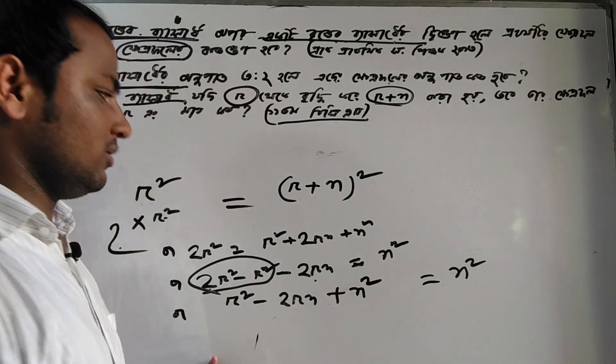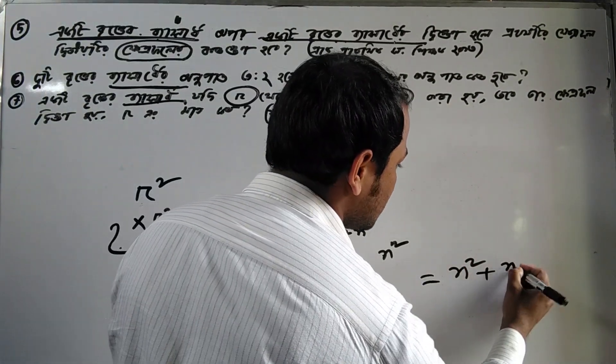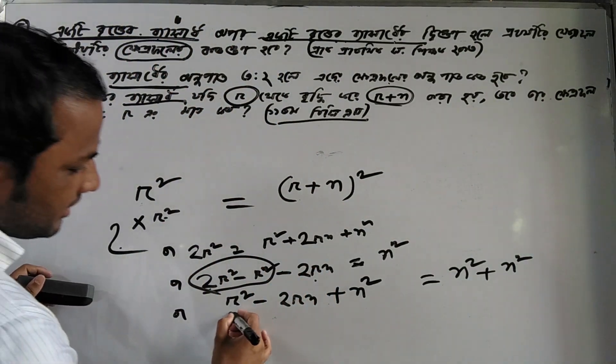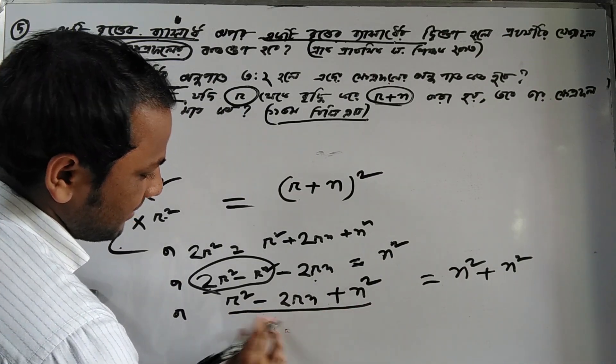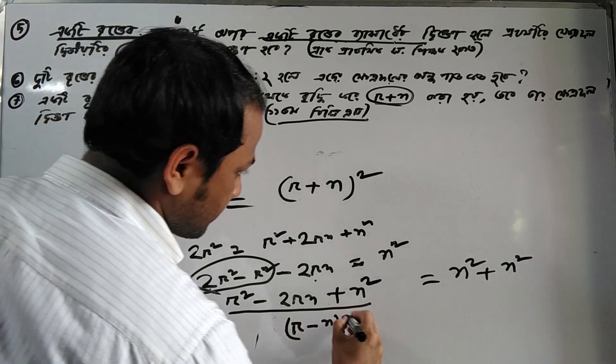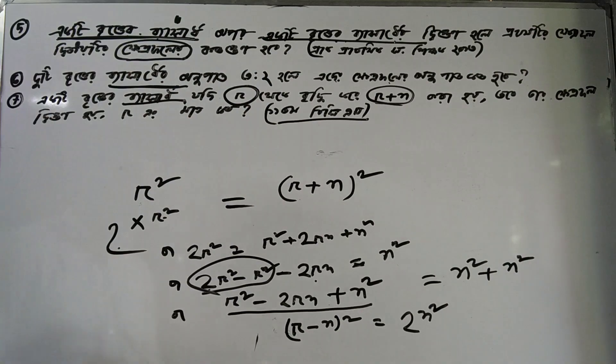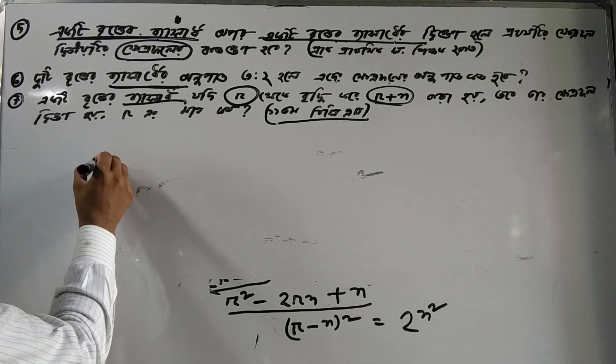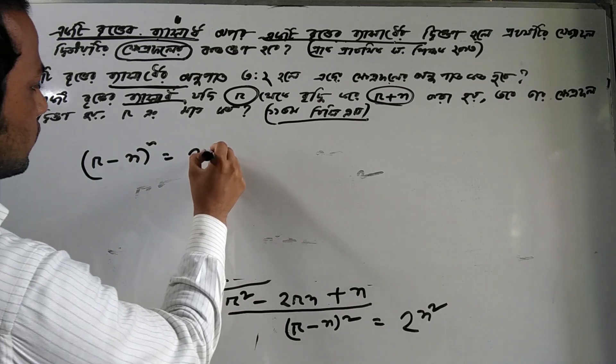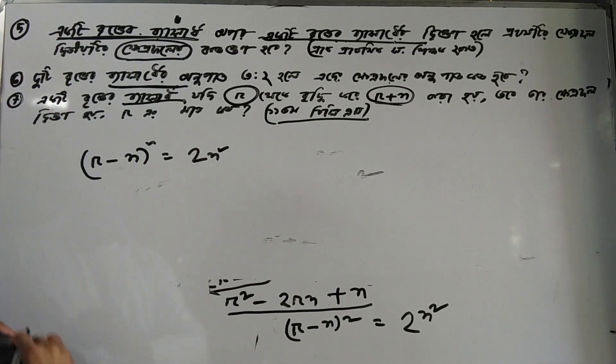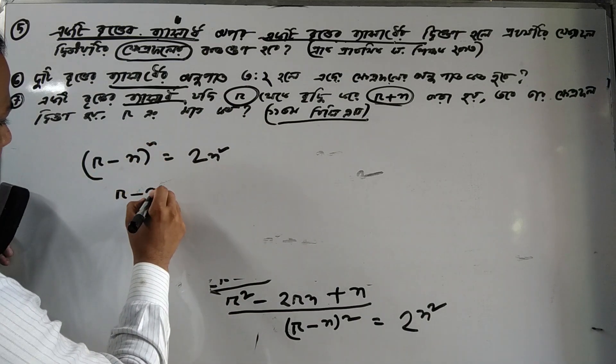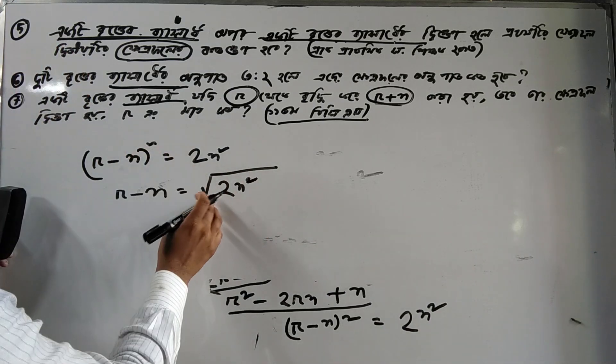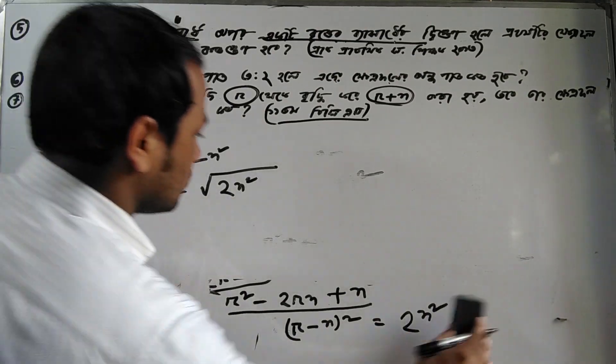Using the (a minus b) squared formula, we can simplify further. When we expand (r minus n) squared, we get r squared minus 2rn plus n squared. After simplification, this equals n squared, so r minus n equals n.